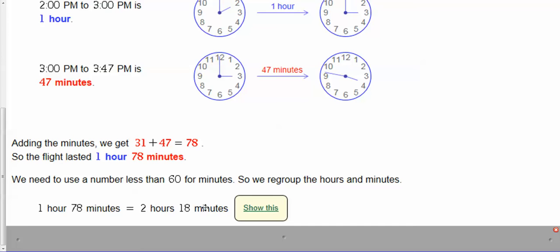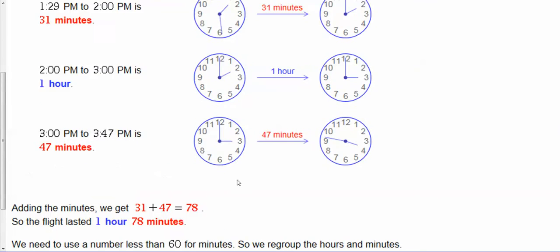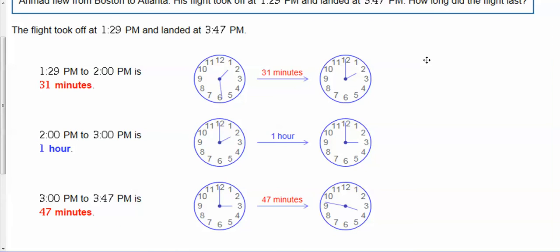Now here's another way that we could have done this. You could have gone from 1:29 to 2:29 to 3:29. So this is from 1:29 to 3:29. That's 2 hours.